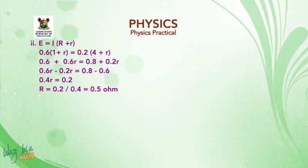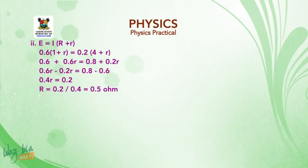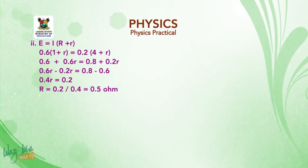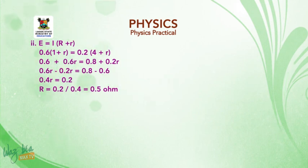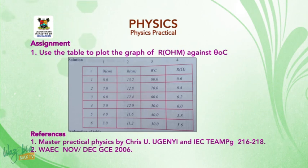B2 Solution: E = I(R + r), where R is external resistance and r is internal resistance. This gives 0.6(1 + r) = 0.2(4 + r). Rearranging the equation, we obtain r = 0.2 / 0.4 = 0.5 ohms. Assignment: Use the table to plot the graph of R (ohms) against θ (degrees). Thank you very much.